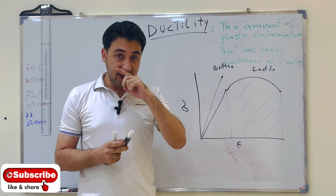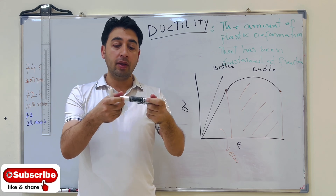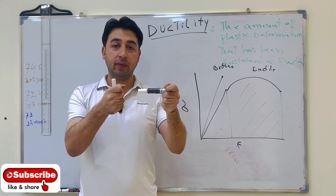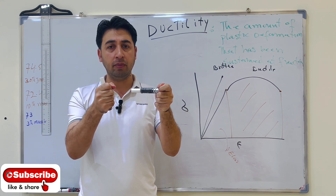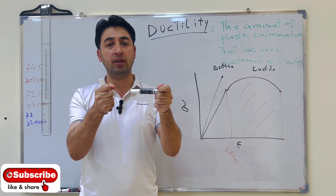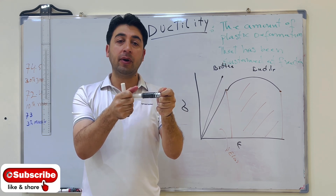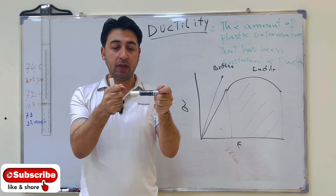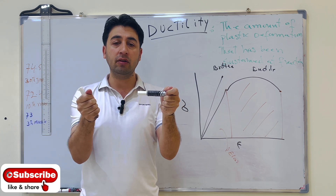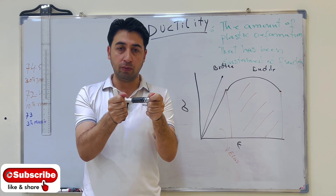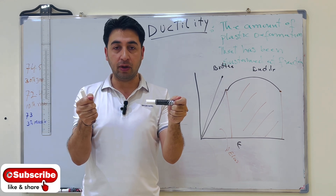Now let's look at this physically. If we have a specimen and we deform it, if the deformation is elastic, the specimen will extend but if we release the force it will go back to its original position. But if we apply force and then release it and the specimen does not come back to its original position, there is a permanent deformation — which is the plastic deformation.